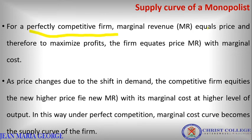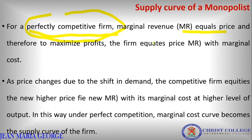In a perfectly competitive firm, marginal revenue is equal to price — MR equals price. To maximize profit, the firm equates MC equal to MR. Since MR equals price, we have MC equal to MR equal to price. This is the profit-maximizing condition.